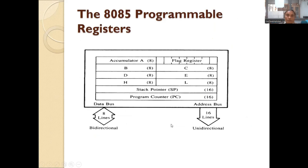This is the diagram of programmable registers of the 8085. Here we have the accumulator, which is an 8-bit register. Near the accumulator is the flag register, which is also 8 bits wide, but only 5 bits in the flag register are used. Below these are the six general-purpose registers: B, C, D, E, H, and L — each storing 8 bits. Below those are the stack pointer and the program counter, which are 16-bit registers used to store 16-bit memory addresses. The data bus transfers data to and from the microprocessor, and the address bus is a 16-bit unidirectional line for transferring addresses.